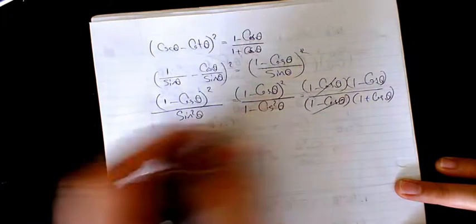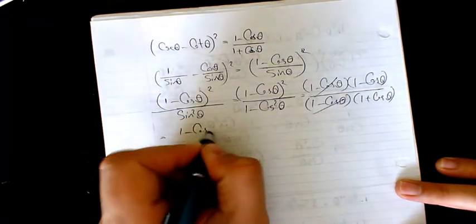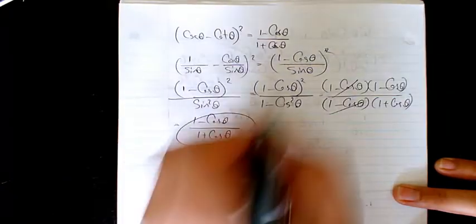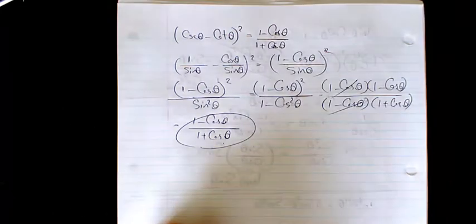So these two cancel out. It will be 1 minus cosine theta divided by 1 plus cosine theta. That's exactly what you see on the right hand side of this equation.